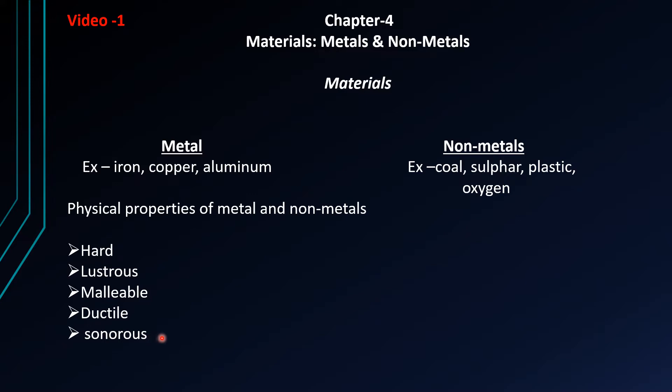Next is sonorous — metals can produce sound when they strike each other or are beaten by another object. But non-metals do not do this; when beaten, they suddenly break down. Non-metals like coal, sulfur, and plastic break apart rather than produce sound.